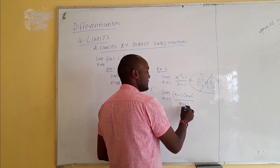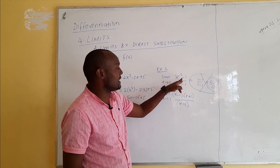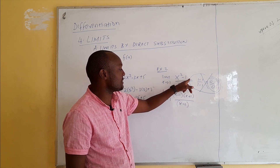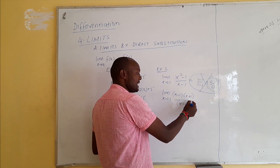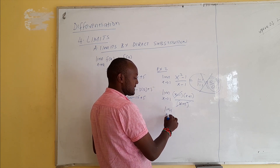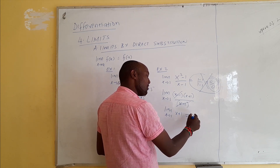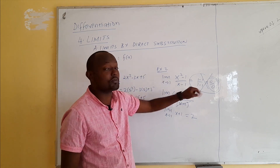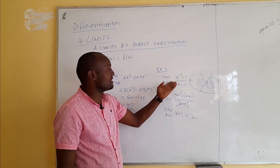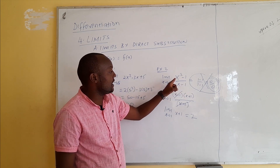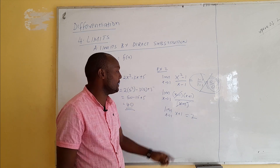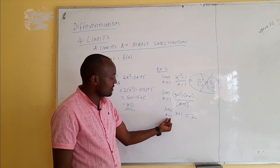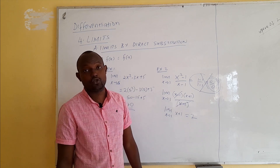How do we solve this? Using algebra, we factorize the numerator: x² - 1 = (x - 1)(x + 1). So the expression becomes the limit as x approaches 1 of (x - 1)(x + 1) / (x - 1). The (x - 1) factors cancel, leaving the limit of (x + 1). Now replacing x with 1 gives 1 + 1 = 2. So by factoring first, we can apply direct substitution and get the answer 2.